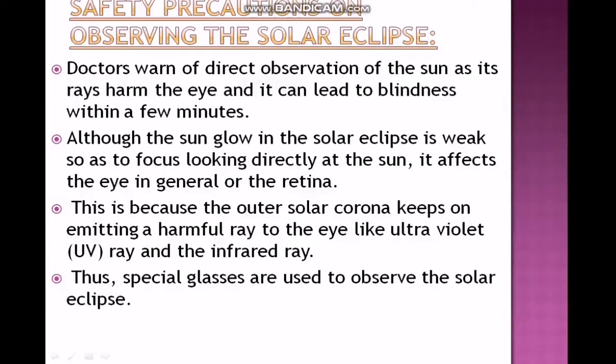Safety precautions on observing the solar eclipse. Doctors warn of direct observation of the Sun as its rays harm the eyes and can lead to blindness within a few minutes. Although the Sun's glow in the solar eclipse is weak, looking directly at the Sun affects the eye or the retina. This is because the outer solar corona keeps on emitting harmful rays like ultraviolet and infrared rays. Thus, special glasses are used to observe the solar eclipse.